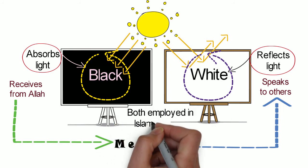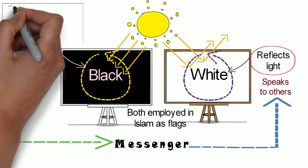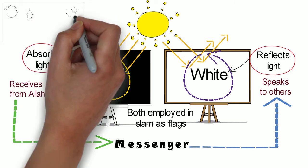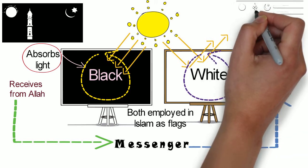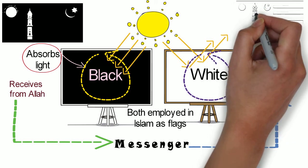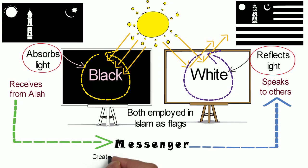So both have been employed in Islam as flags, and also in Jamaat Ahmadiyya's choice of color. In Jamaat Ahmadiyya's flag and in Khudam Ahmadiyya's flag, both are reflected.